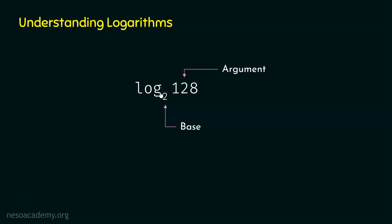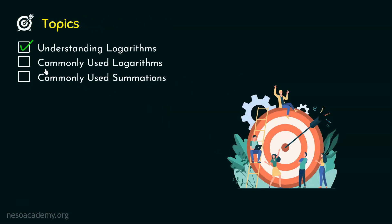Log 128 base 2 tells the number of times we need to multiply 2 by itself to obtain 128. We need to multiply 2 by itself 7 times because 2 power 7 is 128. So log 128 base 2 is 7. Logarithm tells the number of times we multiply the base by itself to obtain the argument — we must always look at the power of the base.